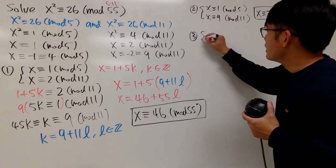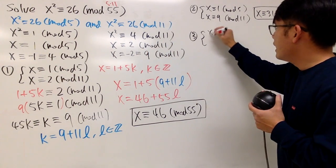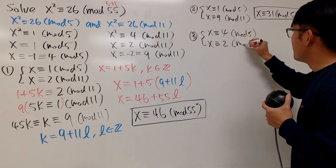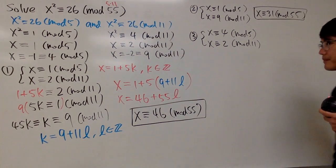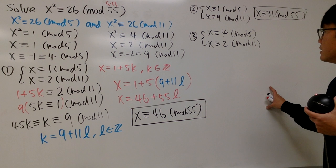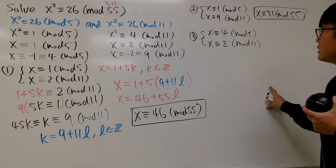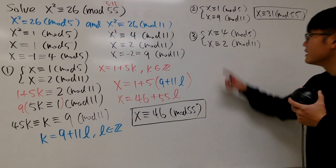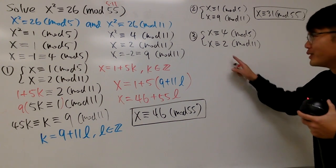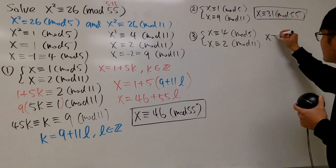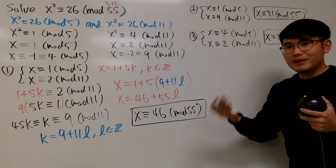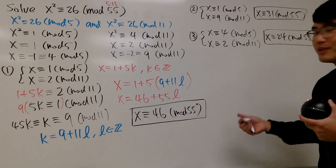For the third system, pair x congruent to 4 mod 5 with x congruent to 2 mod 11. Let's see — 24 works. 24 divided by 5 gives remainder 4, and 24 divided by 11 gives remainder 2. So the answer here is x congruent to 24 mod 55. You can run through the numbers from 0 to 54 and just think about it, or do all the algebra again.